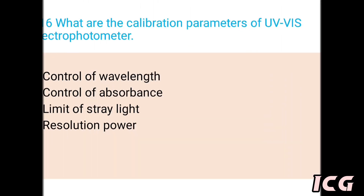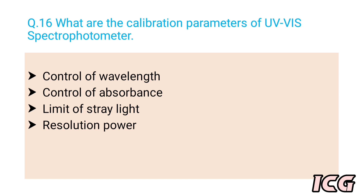The next question is: what are the calibration parameters of UV-Visible spectrophotometer? There are four parameters: the first is control of wavelength, the second is control of absorbance, the third is limit of stray light, and the last one is resolution power.